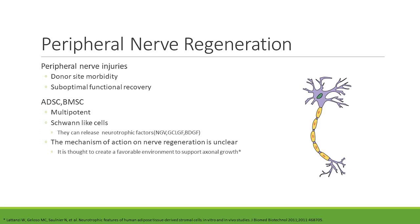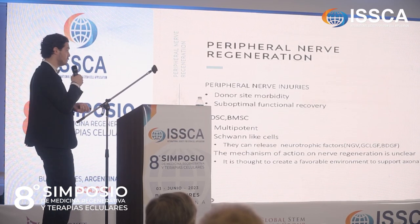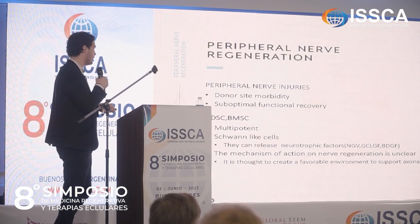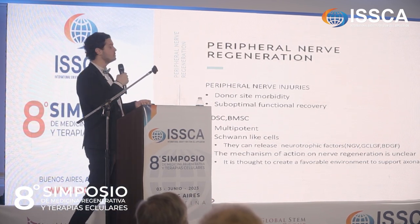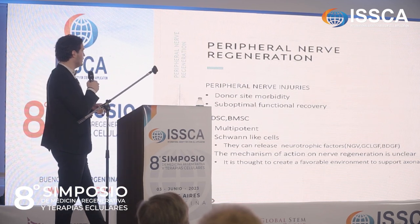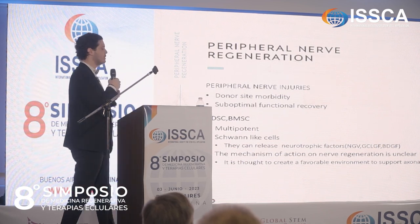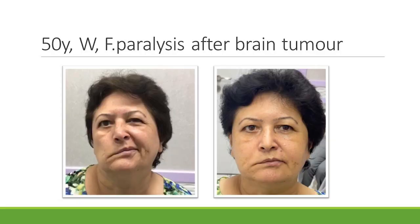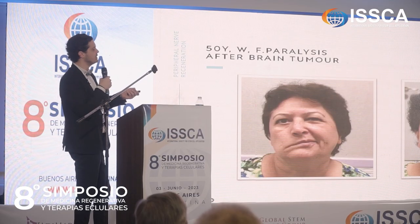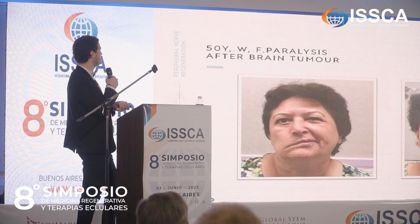We can also use stem cells for peripheral nerve regeneration. In peripheral nerve injuries there is significant donor site morbidity with surgery and often suboptimal functional recovery. By using adipose tissue-derived and bone marrow stem cells, they can transform into Schwann-like cells, providing beneficial effects on neural degeneration. This is a 50-year-old woman suffering from facial paralysis after a brain tumor — this is what we achieved after one session of stem cells, Botox treatment, and fat grafts.